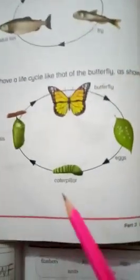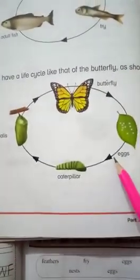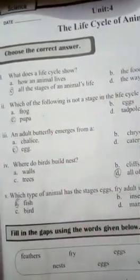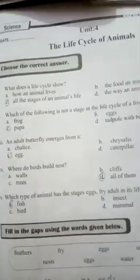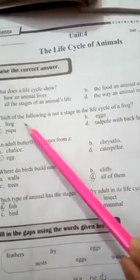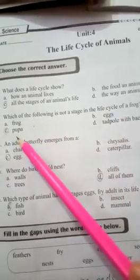Here is the butterfly's life cycle: egg, caterpillar, and pupa. Option C shows frog, egg, pupa, and tadpole with back leg. Pupa is a stage in the butterfly's life cycle, not the frog's life cycle. So we circle C — pupa is not a stage in the frog's life cycle.